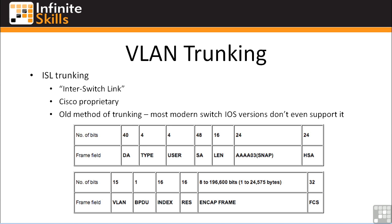That's kind of computationally expensive — it has to take frames, re-encapsulate them, and compute checksums. ISL is a little slower than 802.1Q trunking, but in most situations you'll never notice it because Ethernet speeds are so fast that most systems and users can't keep up anyway.